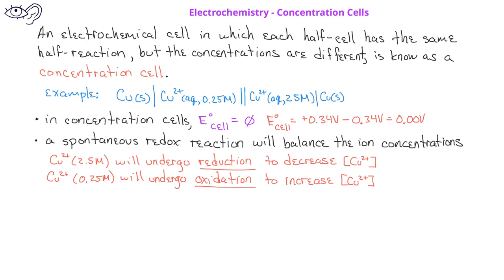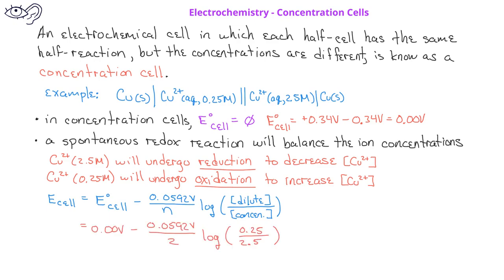We can calculate the cell potential using the modified Nernst equation, but in this case, instead of taking just log of Q, we would usually substitute this for log of the dilute ion concentration divided by the concentrated ion concentration. In the cell described above, this would give us the modified Nernst equation of 0.00 volts minus 0.0592 divided by 2 multiplied by the log of 0.25 divided by 2.5, which gives us a cell potential for this copper copper 2 plus concentration cell of plus 0.296 volts.